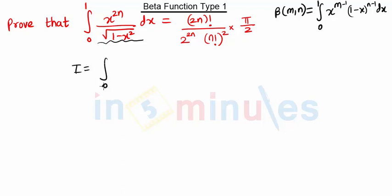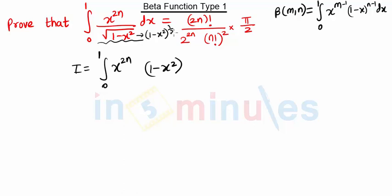Consider I equal to the integration from 0 to 1 of x raised to 2n. Taking the (1 minus x square) term from the denominator into the numerator, it can be represented as (1 minus x squared) raised to minus half, since the square root sign can be represented as a power of half.